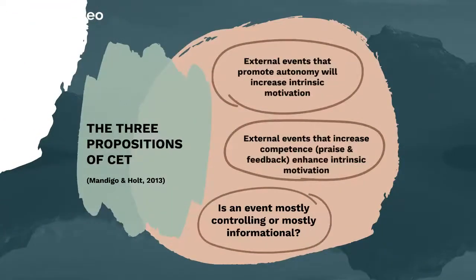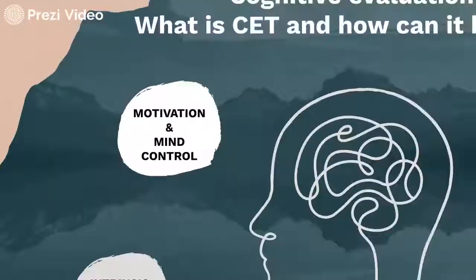CET is based on three propositions. External events that offer choices and promote autonomy will increase intrinsic motivation. External events that increase competence, such as offering constructive feedback and praise, increase intrinsic motivation, while offering competence-thwarting negative criticisms will decrease it. And finally, whether an event is mostly controlling or mostly informational will determine the level of intrinsic motivation.